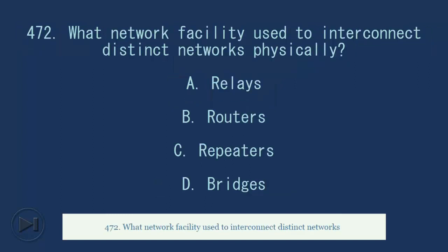472. What network facility used to interconnect distinct networks physically? A. Relays. B. Routers. C. Repeaters. D. Bridges. Answer, D. Bridges.